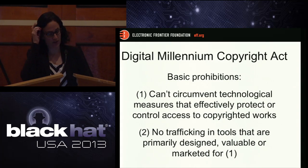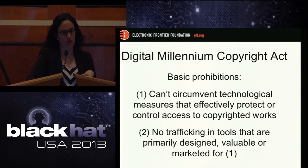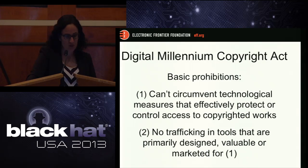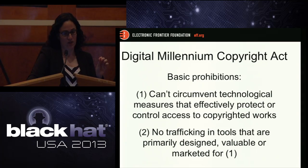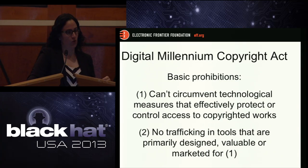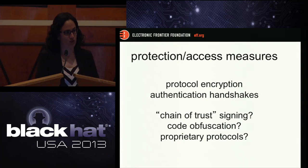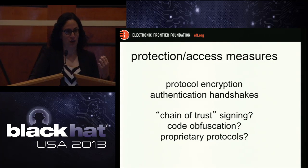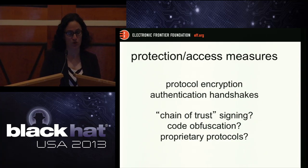Anytime we see a situation where somebody is violating a contract, your first thought is well, it's a breach of contract — okay. But then you also have the concern that that could turn into a much more serious problem because of the computer crime laws. The next legal issue we're going to talk about is the Digital Millennium Copyright Act, passed in the mid-'90s to update copyright law in light of digital content on the internet. Two basic prohibitions to keep in mind: first, you can't circumvent technological protection measures put in place to protect or control access to copyrighted works. Second, you can't traffic in tools that are primarily designed, marketed, or valuable for circumventing these technological protection measures. The question of what a technological protection measure is can be difficult — authentication handshakes and protocol encryption would qualify, but code obfuscation and proprietary protocols are open questions.